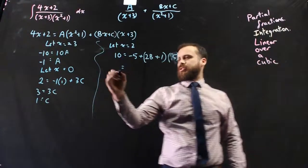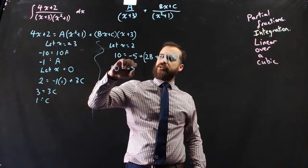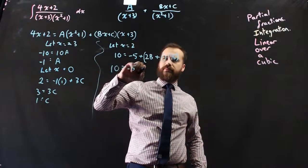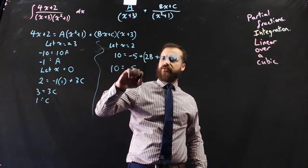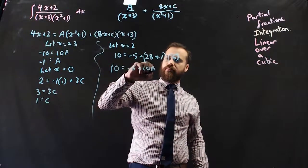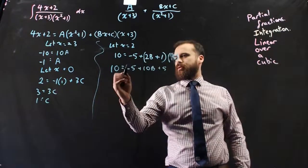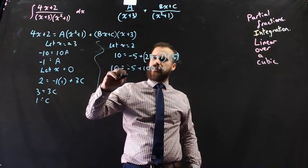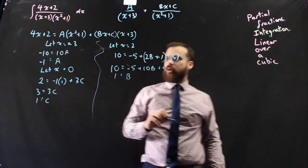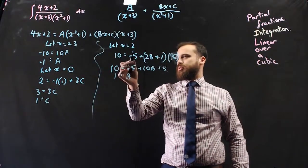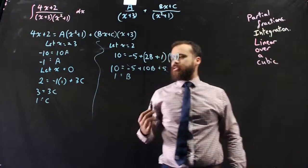Alright, so just a little more working here. 10 minus 5 plus 10b plus 5. Cancel out, cancel out, cancel out, b is going to be equal to 1. That would have worked no matter what our x was, as long as we knew what our a and our c values were.